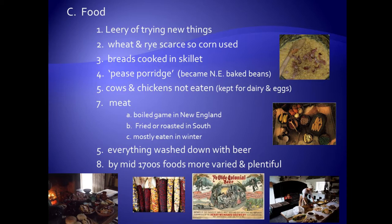For meat, very little was eaten. They very seldom ate their cows or chickens — cows were kept for dairy products like butter, cream, and cheese, and chickens for their eggs. Meat that they did eat would be eaten in the winter. An interesting difference between North and South: meats cooked in the North would be boiled, while in the South meats would be either fried or roasted. Usually only eaten in winter, because they had no way of preserving meats — they wouldn't kill a deer in summer because the meat would spoil before they could eat it all.